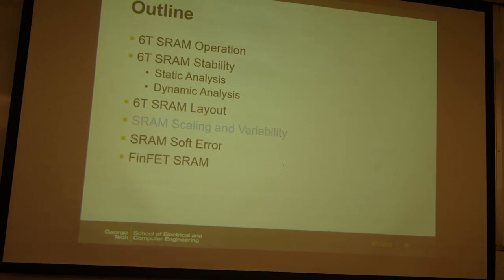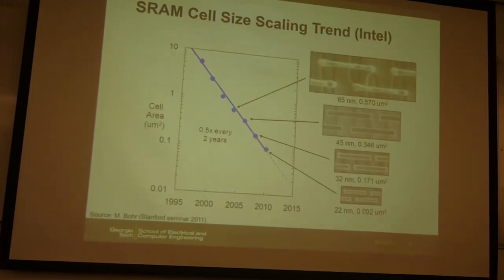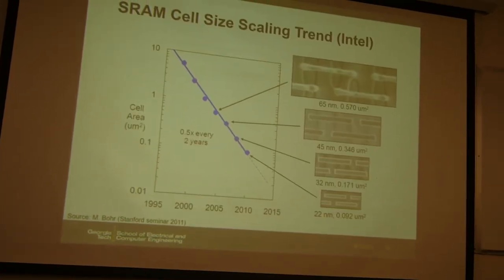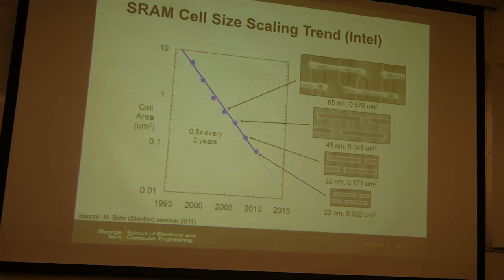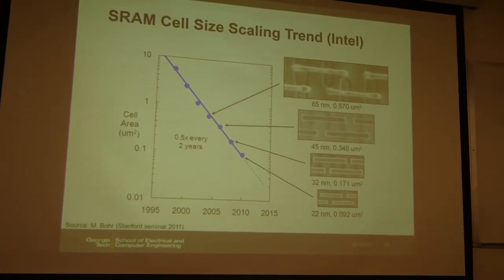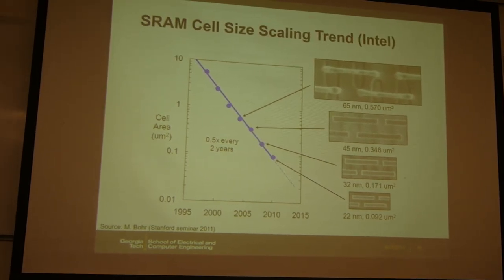We will continue our discussion on SRAM technology scaling and variability issues. As seen before, SRAM scaling has been following Moore's law very strictly. The SRAM cell area, measured in micrometer squared, shows a scaling trend of about 2.5x every two years, at least until recently at 22 or 14 nanometer nodes. We do see a delay from 14 to 10 nanometer in today's industry.